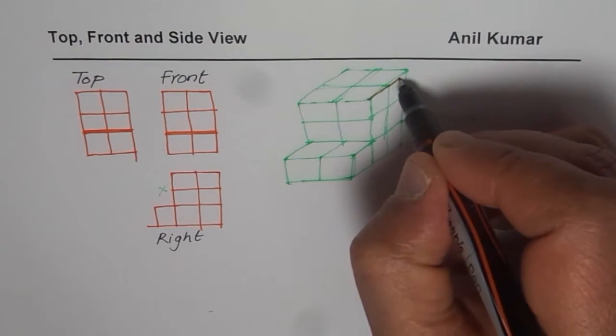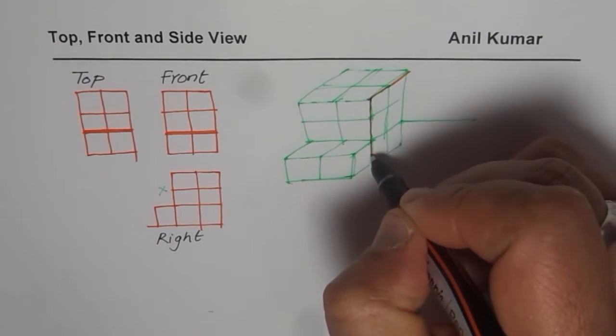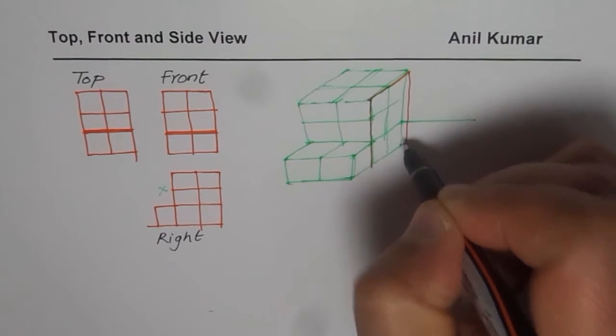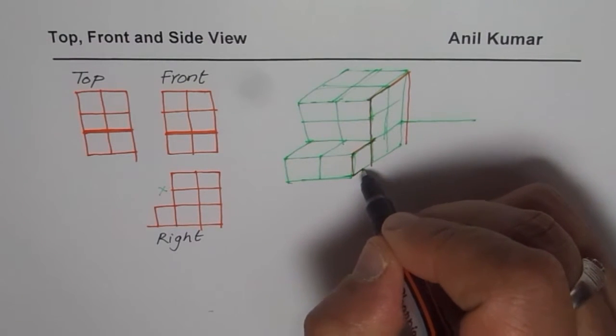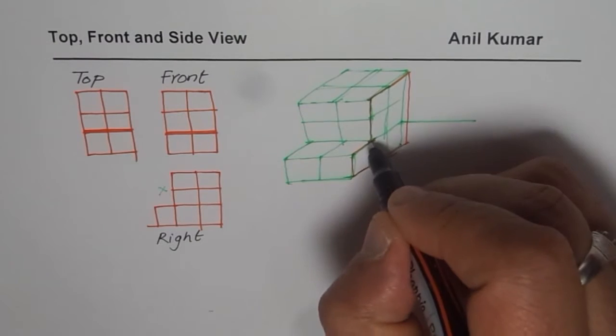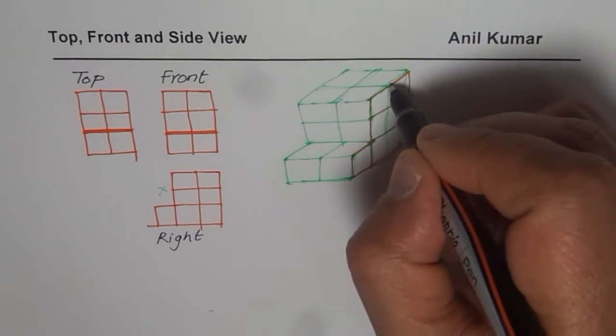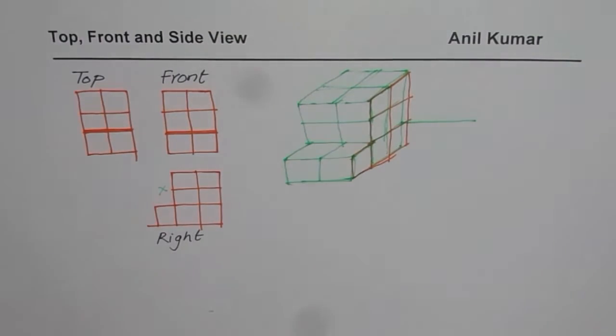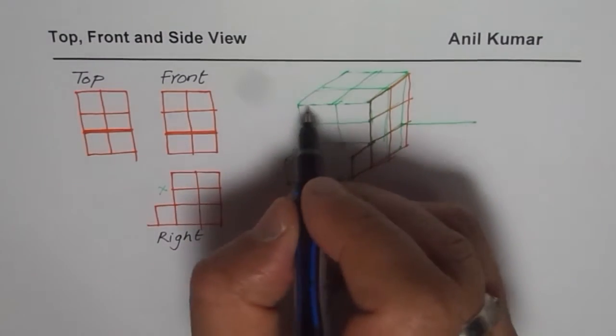Now look at it. From the side view, this is our side view. This is the side view given to us. And the top view for us is this square block which you see.